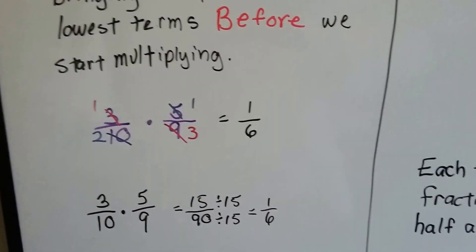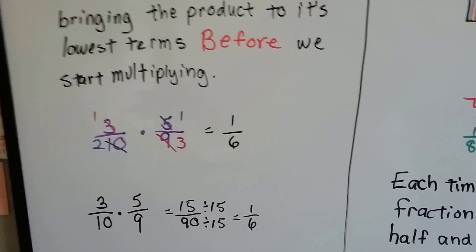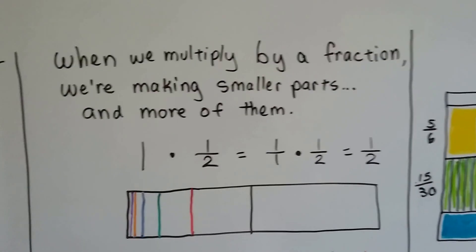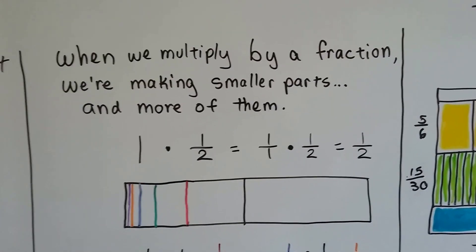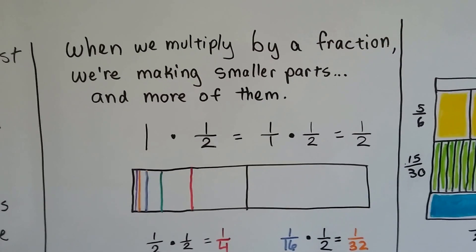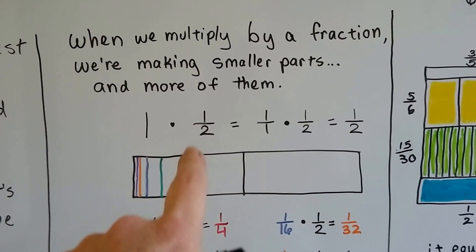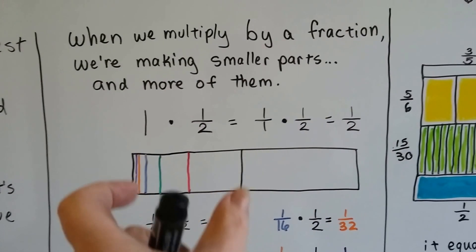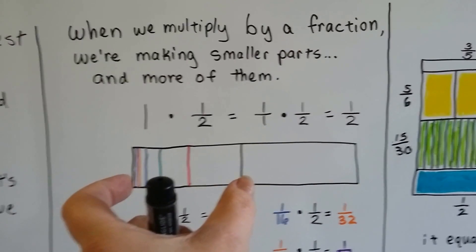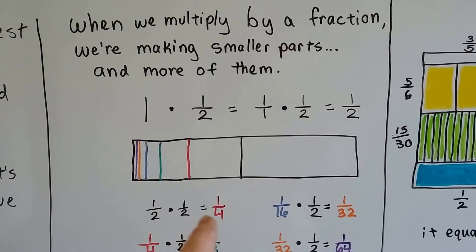I wanted to show you this: when we multiply by a fraction, what's happening is we're making smaller parts and more of them. If we have one whole bar and we multiply it by a half, we're going to get a half. It now becomes a half. If we multiply that half by a half, we now have a fourth.